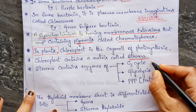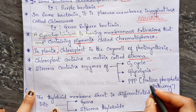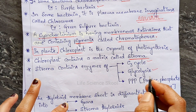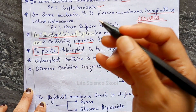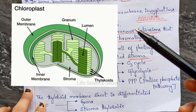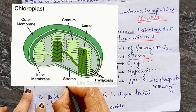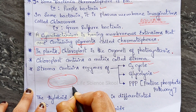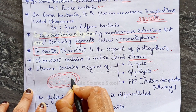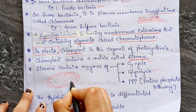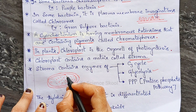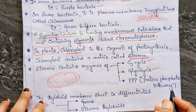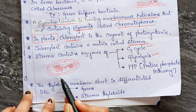The stroma contains enzymes of the C3 cycle, glycolysis, and the pentose phosphate pathway (PPP). Looking at a rough diagram of the chloroplast: the matrix region is called stroma, and it contains C3 cycle enzymes, glycolysis enzymes, and pentose phosphate enzymes. The thylakoid membrane sheet is differentiated into two types: grana and stroma thylakoid.